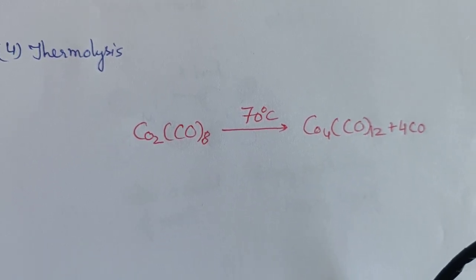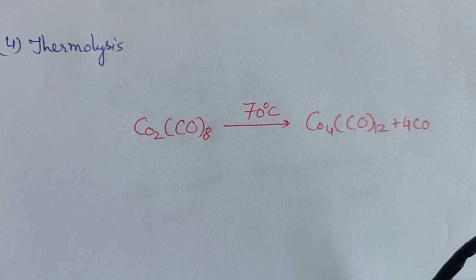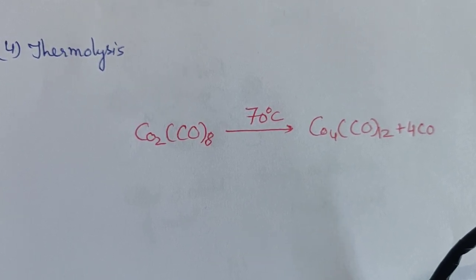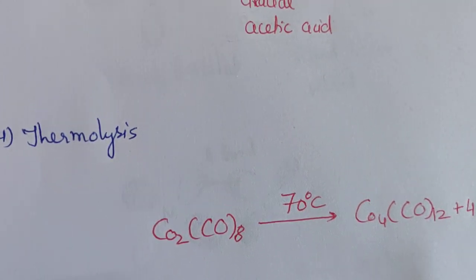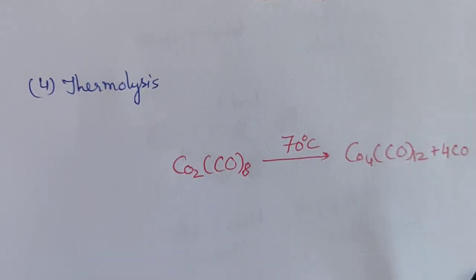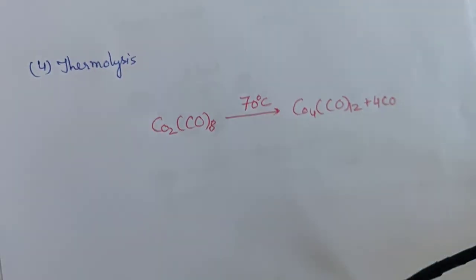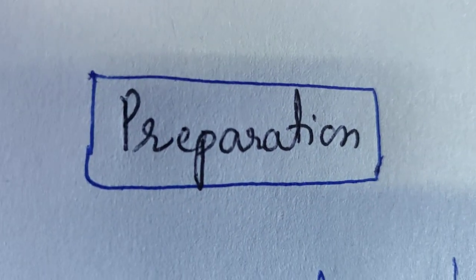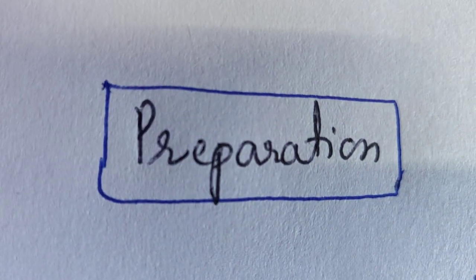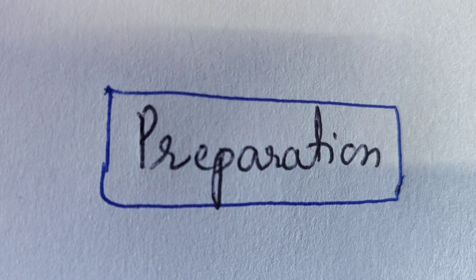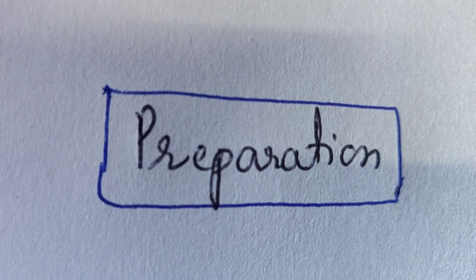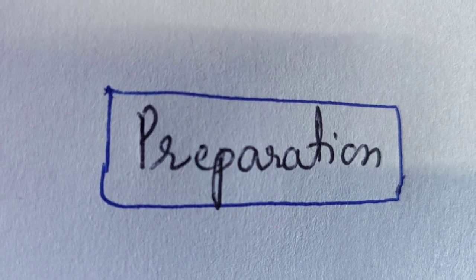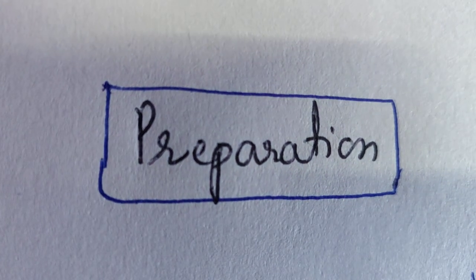In summary, these are the four general methods for the preparation of metal carbonyls: first, direct carbonylation; second, reductive carbonylation; third, photolysis; and fourth, thermolysis. The first two methods cover mononuclear carbonyls, while photolysis and thermolysis are used to prepare polynuclear carbonyls.